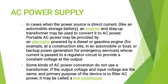In cases where the power source is direct current, like an automobile storage battery, an inverter and step-up transformer may be used to convert it to AC power. Portable AC power may be provided by an alternator powered by a diesel or gasoline engine — for example, at a construction site, in an automobile or boat, or as backup power generation for emergency services. Some kinds of AC power conversions do not use a transformer; this is called a line conditioner.